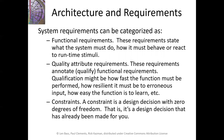A quality attribute requirement, on the other hand, is going to qualify or annotate a functional requirement — so how fast the function must be performed, how resilient the system must be to an error in the input, how easy the function is to learn. Going back to the car example: how fast does the car move after you push the button? How often will it actually respond? All of those things are quality attributes. Constraints are design decisions that have already been made.